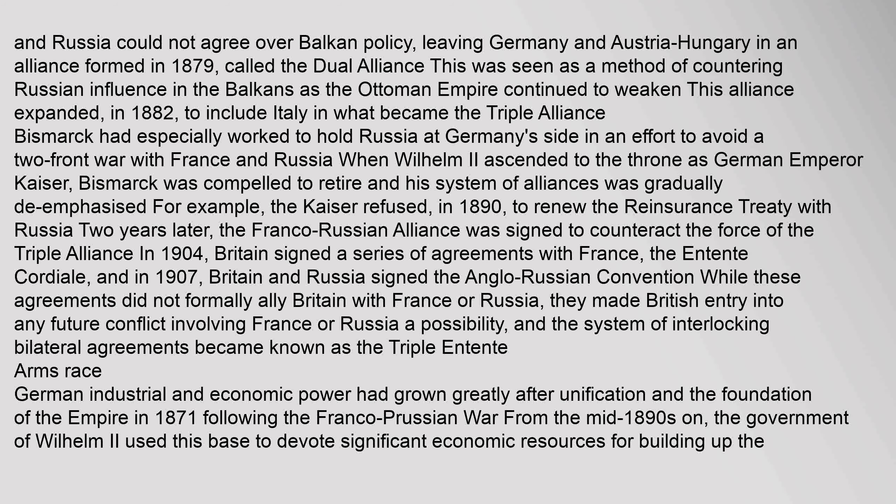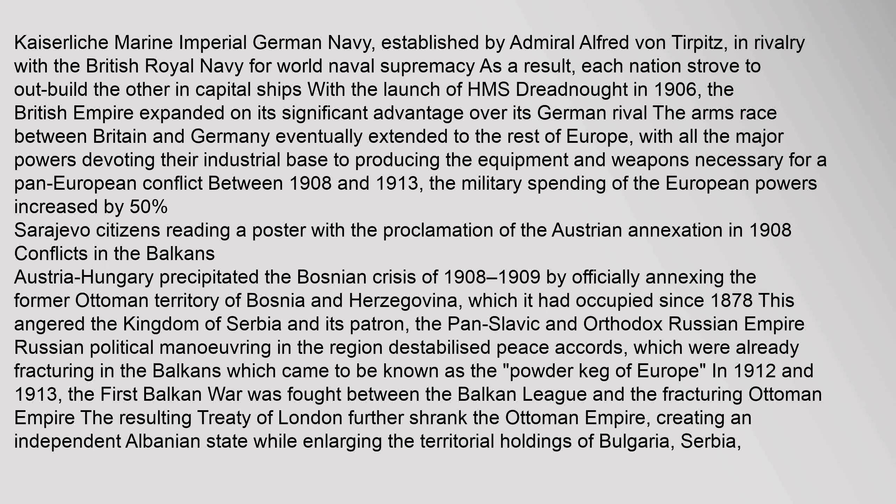German industrial and economic power had grown greatly after unification and the foundation of the Empire in 1871 following the Franco-Prussian War. From the mid-1890s on, the government of Wilhelm II used this base to devote significant economic resources for building up the Kaiserliche Marine — the Imperial German Navy — established by Admiral Alfred von Tirpitz, in rivalry with the British Royal Navy for world naval supremacy. As a result, each nation strove to outbuild the other in capital ships.